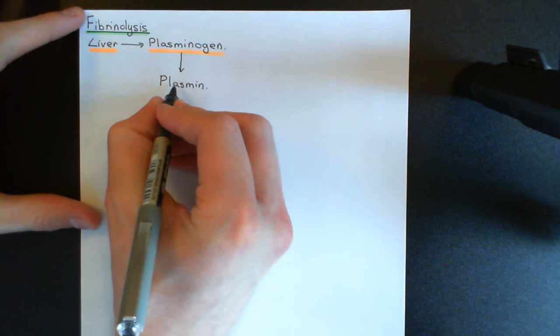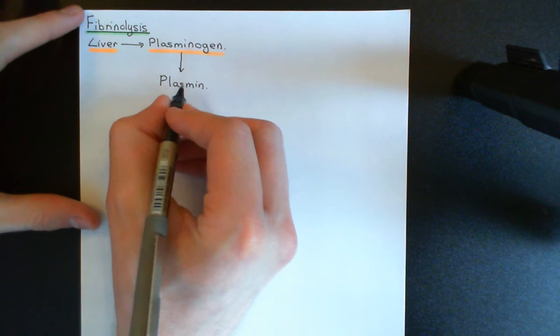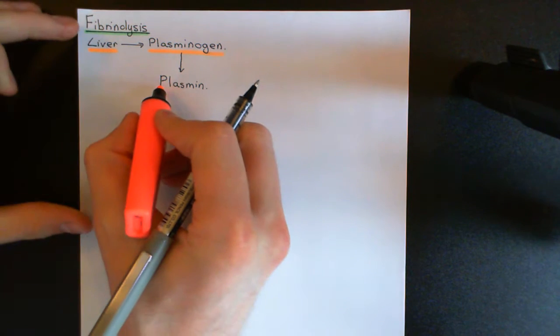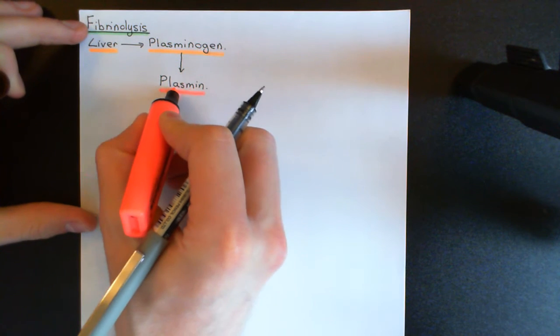Plasmin is the active form, and this active form will then be exposed to the fibrin mesh of the outer portion of the blood clot, whether physiological or pathological, and will start breaking down the fibrin molecules and therefore decomposing the blood clot. So what we need to understand is: how do we convert plasminogen to plasmin? How is that change brought about?